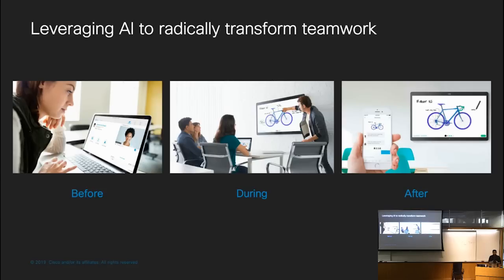For example, we could help users figure out who the right participants or subject matter experts in the company are to invite to a meeting. We could automatically find the time and schedule the meeting, finding a time convenient for all participants. We could send pre-briefing notes in advance. During the meeting, AI can make the meeting go as smoothly as possible and replace distracting work like note-taking. After the meeting, AI can automatically generate transcripts, minutes, summaries, and action items, sending them to all participants so everyone is on the same page.